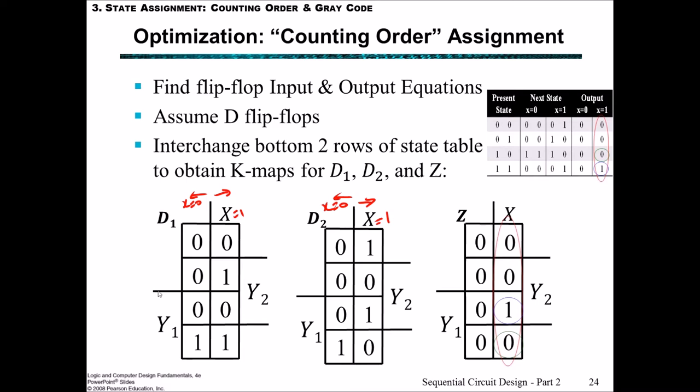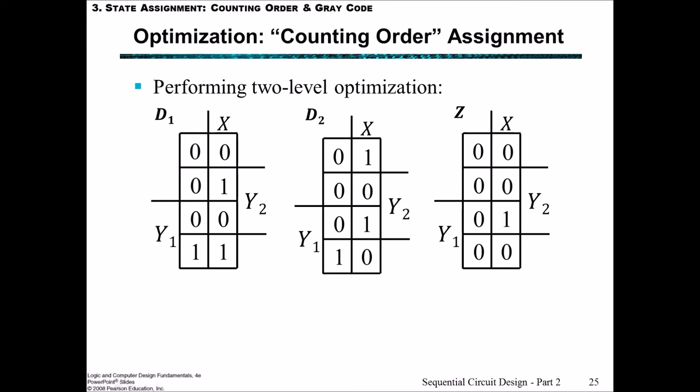So now we have our kmaps. From our kmaps we can draw some rectangles around the 1s and we can work out what the equations are. We can draw some rectangles to cover the 1s for the D1 flip-flop, then for the D2 flip-flop, and finally for the output. We're going to write these out in the sum of products form.